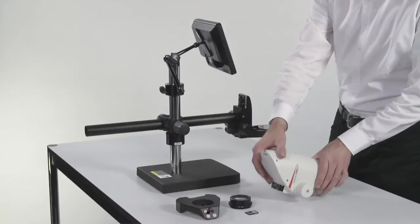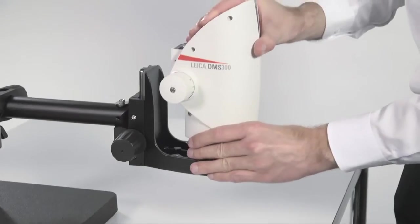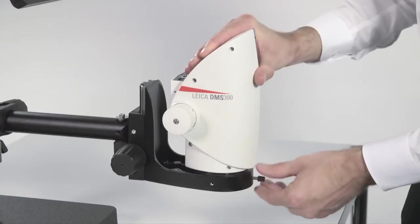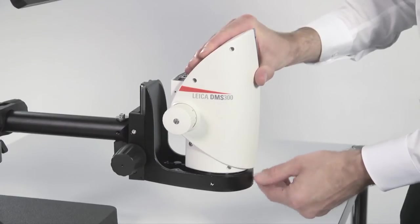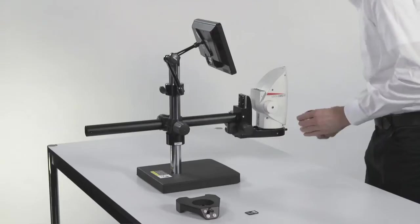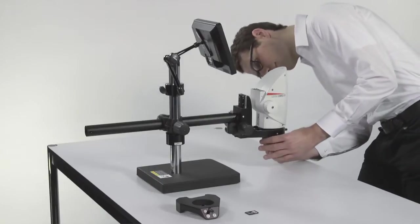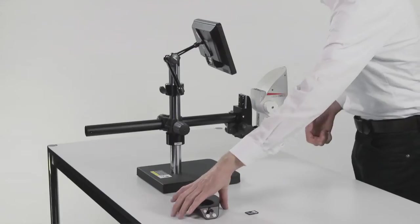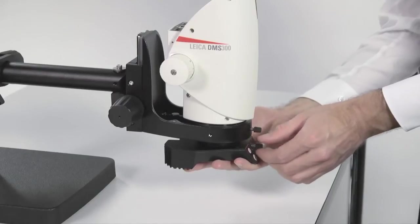Next, we simply mount the Leica DMS-300 into the microscope carrier. Make sure that the DMS unit is secured with the safety screw in the front of the unit. Now screw in the objective that's included with your DMS unit and the ring light, which directly attaches to this objective.